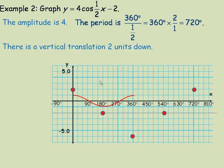We draw a smooth cosine curve through all those points. That's what one period of y equals 4 cos(½x) minus 2 looks like.